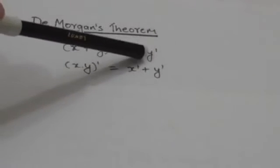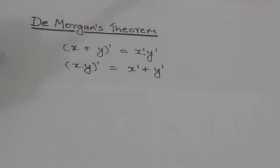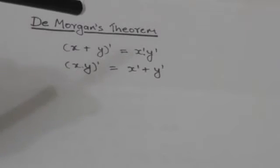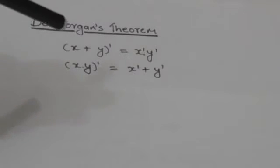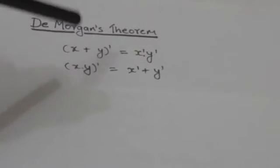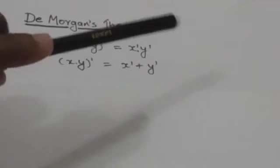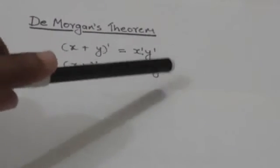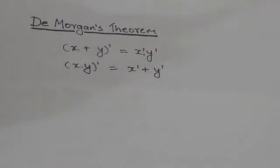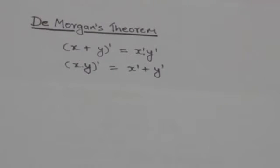It also states that the complement of X and Y equals X complement or Y complement. De Morgan's theorem can be extended for three binary variables.